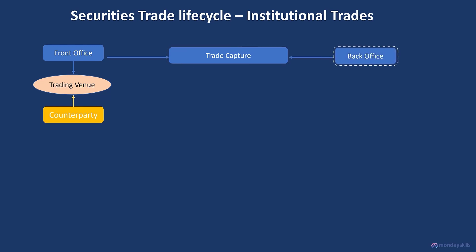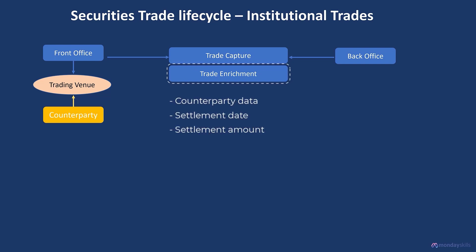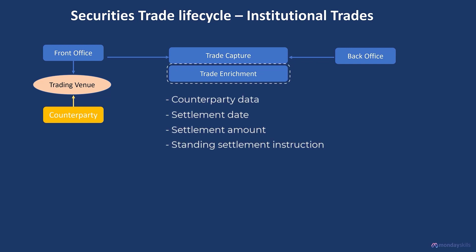Once the trade has been captured in the blotter, it is sent to the back office for post-trade processing. The back office receives the trade and creates a record of the transaction in the post-trade processing system. This trade data will be enriched by the transaction management system using static data from the securities reference data system. The enrichment process would include adding additional details of the security, counterparty data, settlement date, settlement amount, standing settlement instruction data, etc.